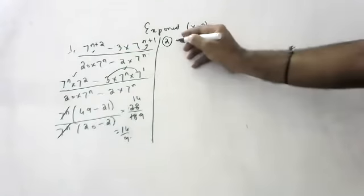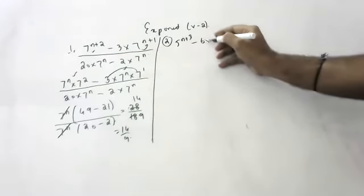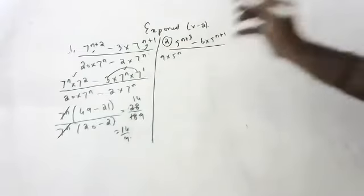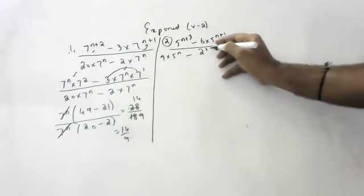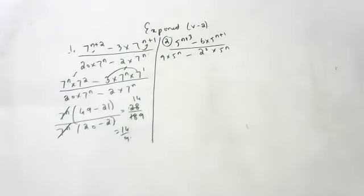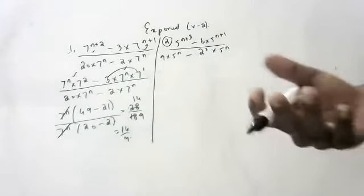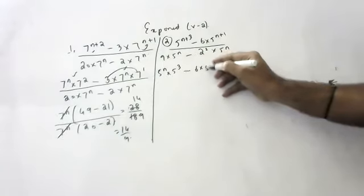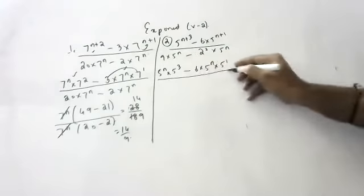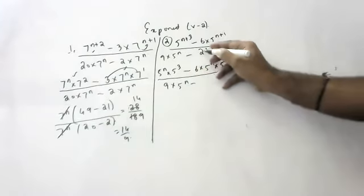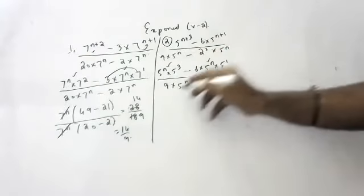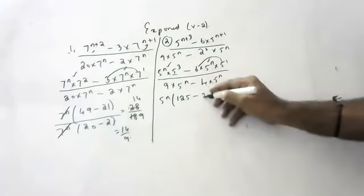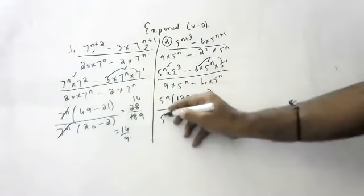Next question: 5 to the power n plus 3, minus 6 into 5 to the power n plus 1, divided by 9 into 5 to the power n, minus 2 squared into 5 to the power n. So 5 to the power n is common in numerator, giving 125 minus 30. Denominator: 5 to the power n common, giving 9 minus 4.